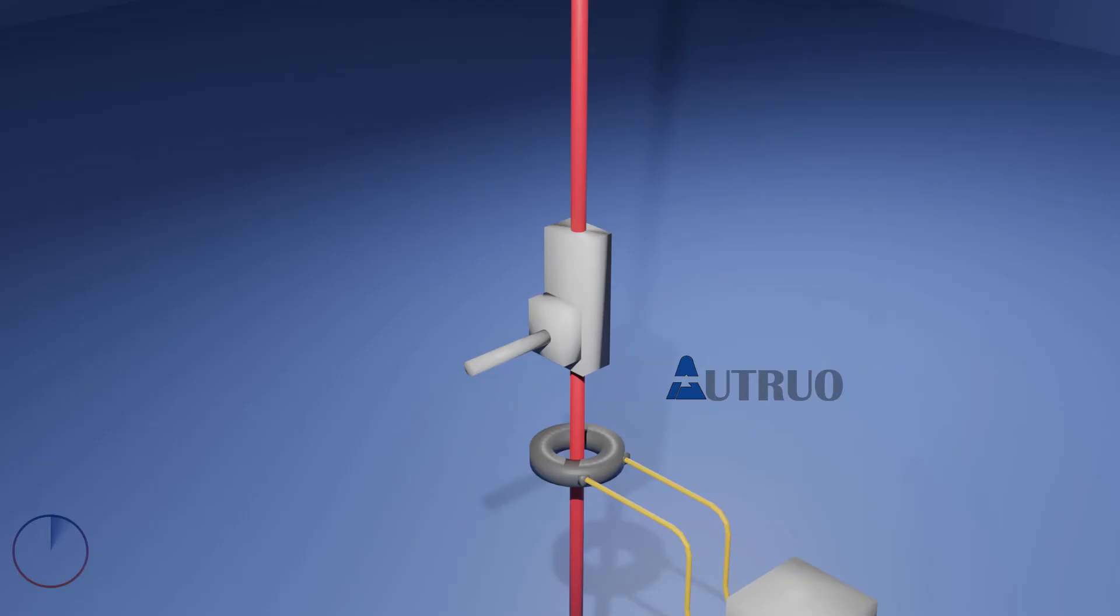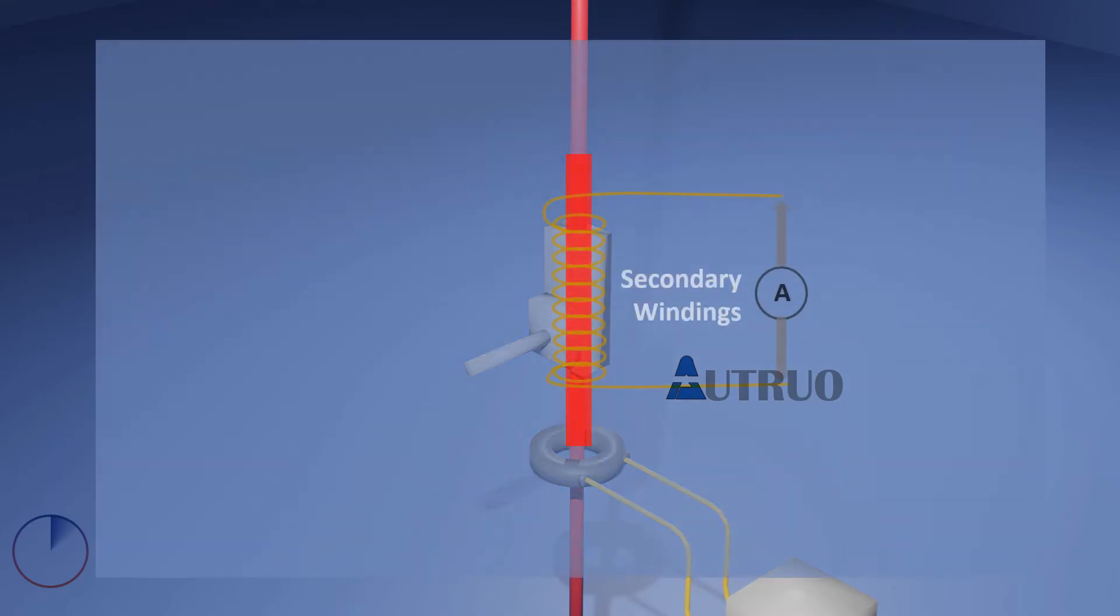What exactly are current transformers? A current transformer is a type of transformer that is used to reduce or multiply an alternating current. It produces current in its secondary. The current produced in the secondary coil is proportional to the current in the primary circuit.